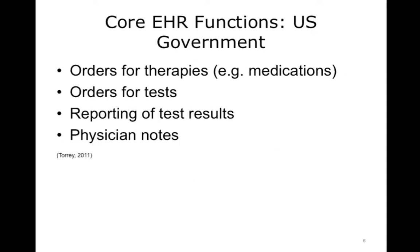The federal government has defined a complete EHR system as containing four basic functions: computerized orders for prescriptions and other therapies, computerized orders for tests, reporting of test results, and physician notes. To date, however, no federally enforced single standard based on this definition has been reached, and which of these records are stored electronically is determined largely by each individual health care practice.